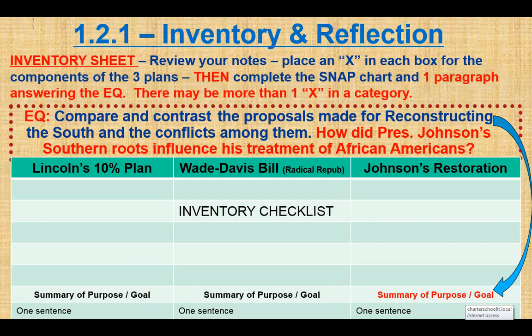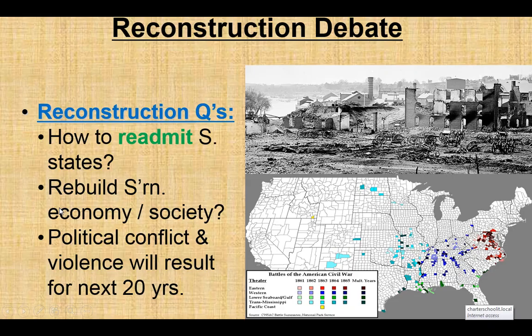After the videocast and going through the various plans, you're going to make this checklist and go through it and identify what characteristics each plan has. There are three of them: one for Lincoln, one for the Radical Republicans who control Congress — remember, there are no Southerners in Congress — and then Andrew Johnson's restoration, which kicks in after Lincoln is assassinated. You should be able to identify a summary, purpose, and goal between each of them, and answer the question as to how Andrew Johnson's Southern roots and influences affect his treatment of African Americans.